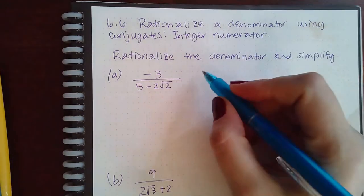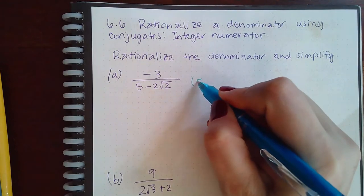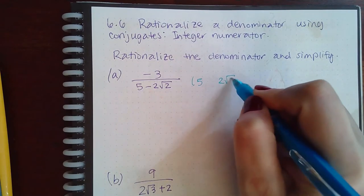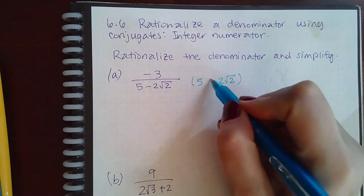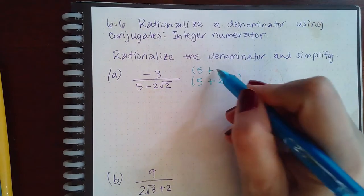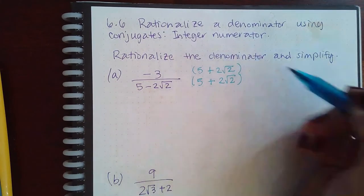So remember what a conjugate is. It means the terms stay exactly the same, but the opposite sign is in the middle. So whatever I do to the bottom, I have to do the same thing to the top.